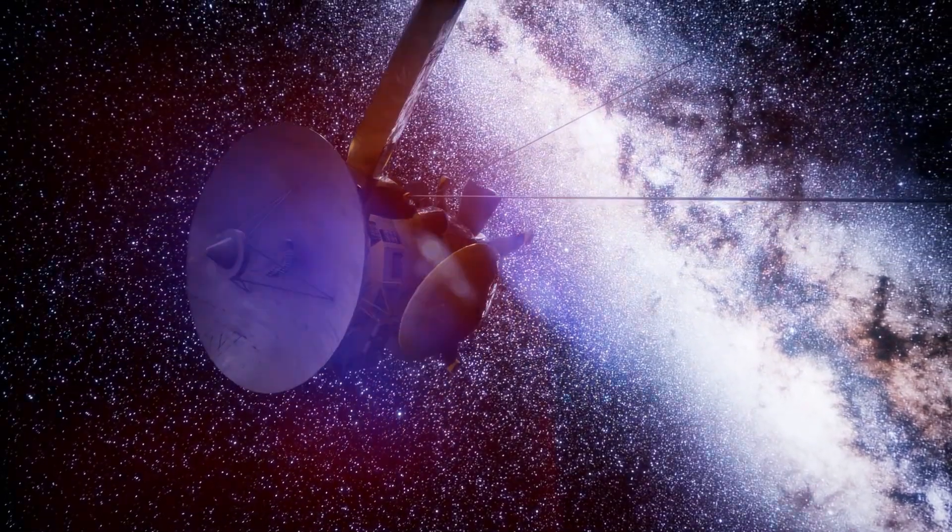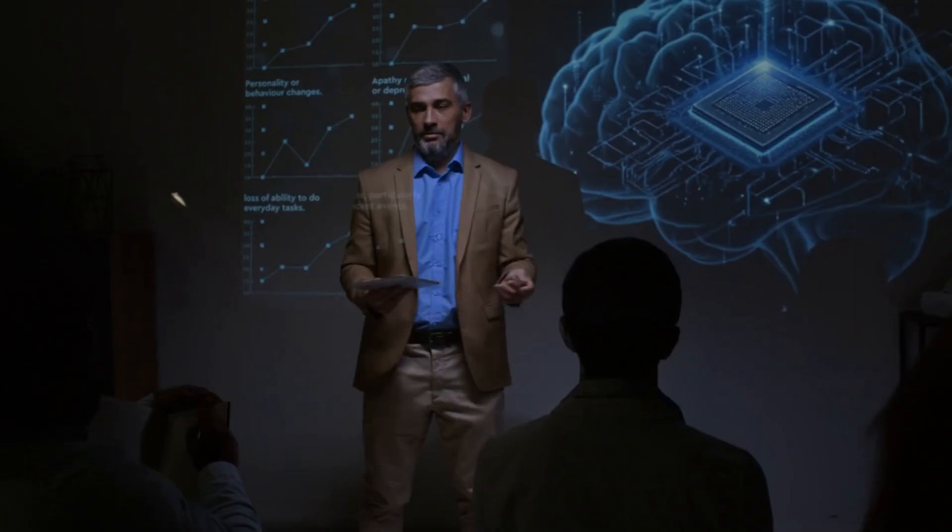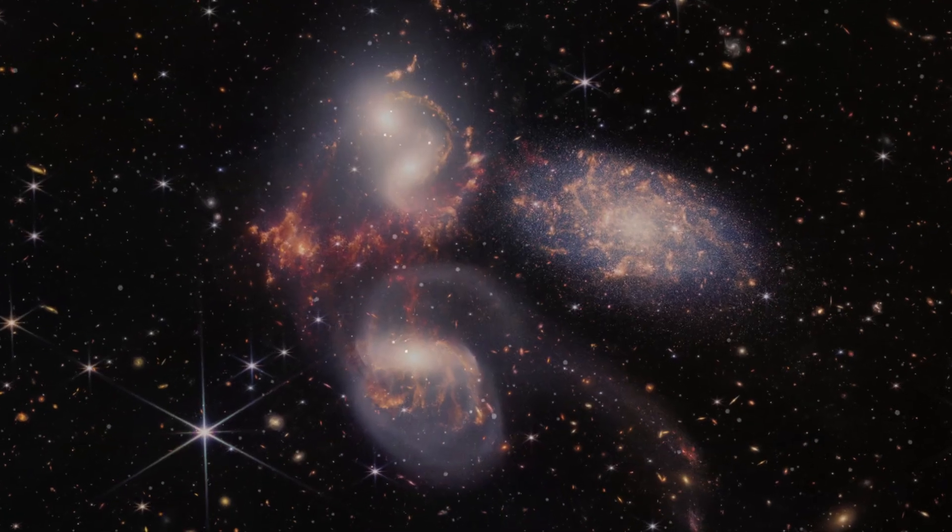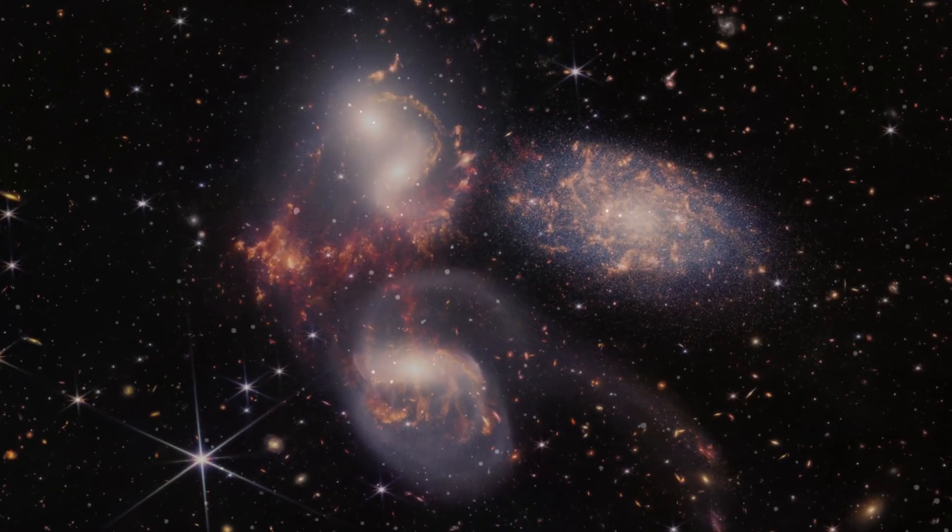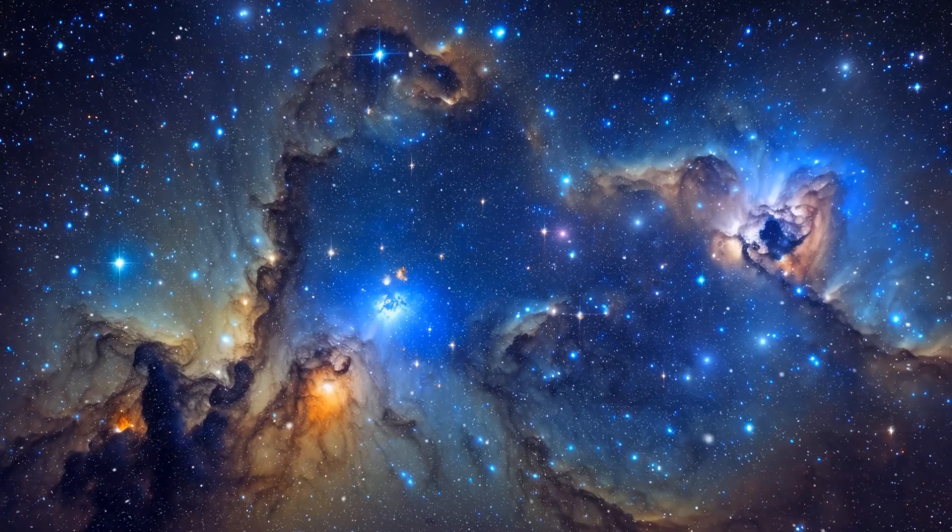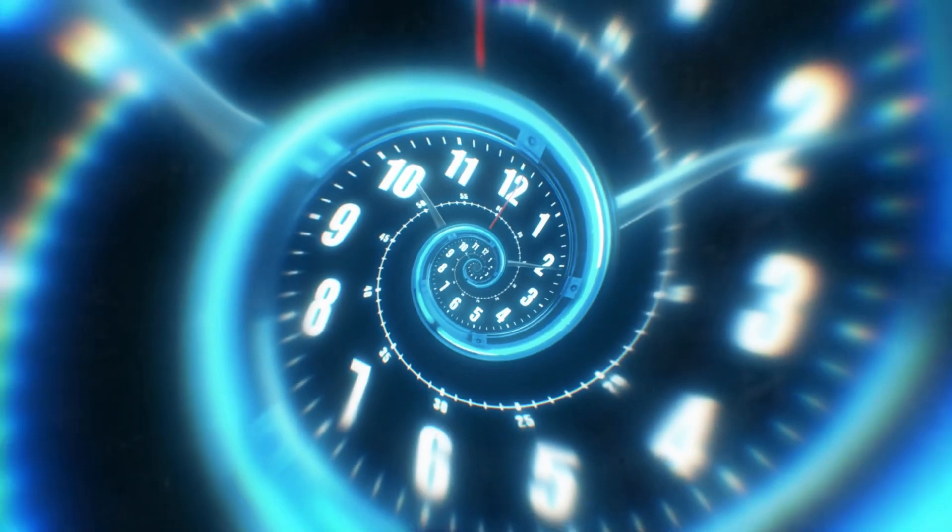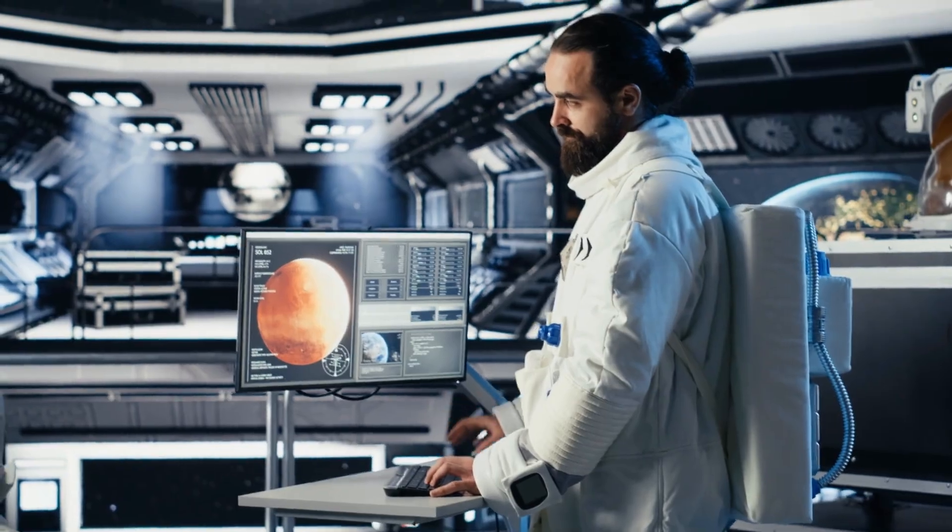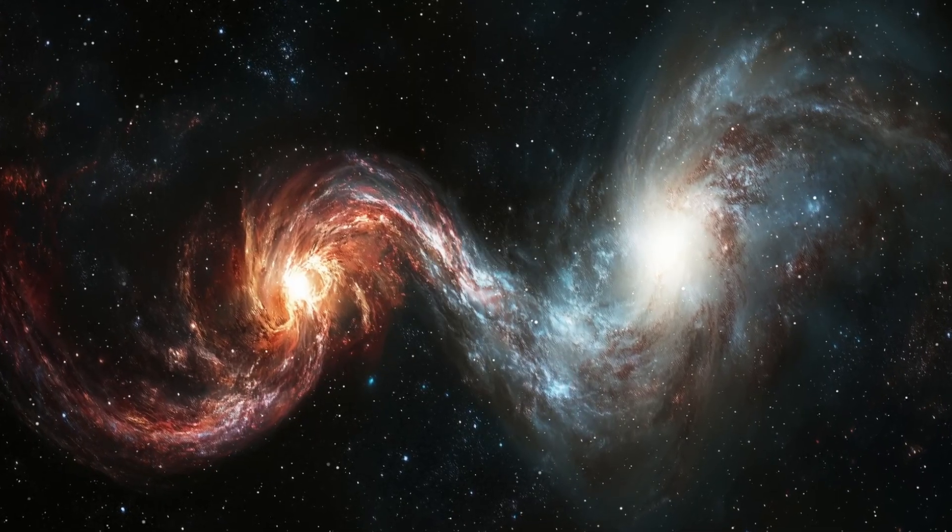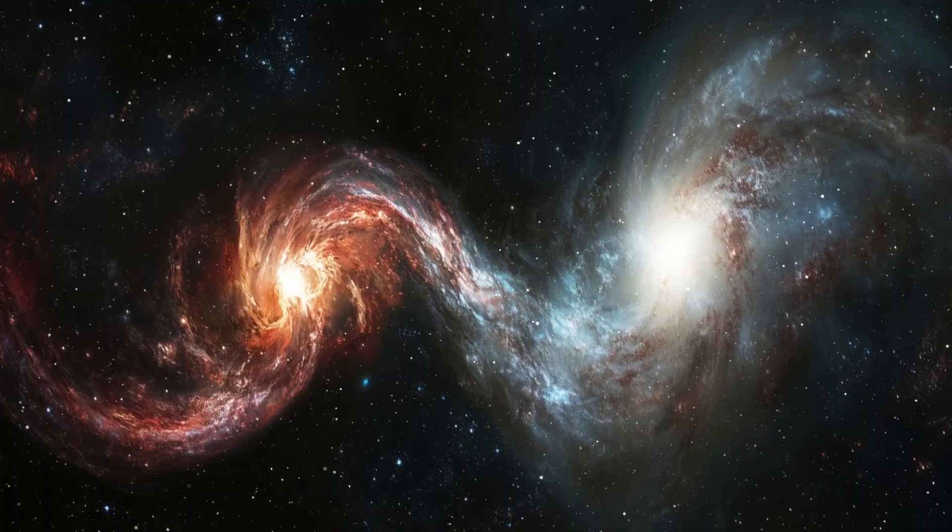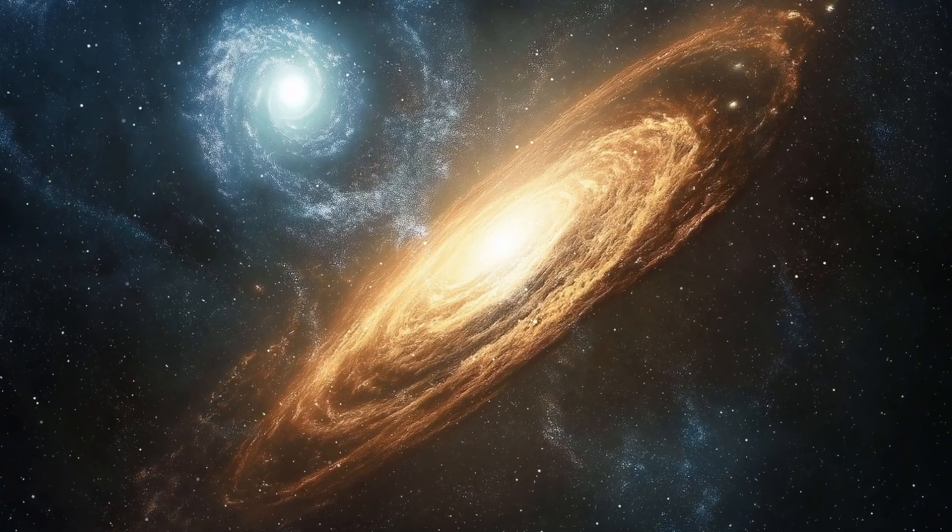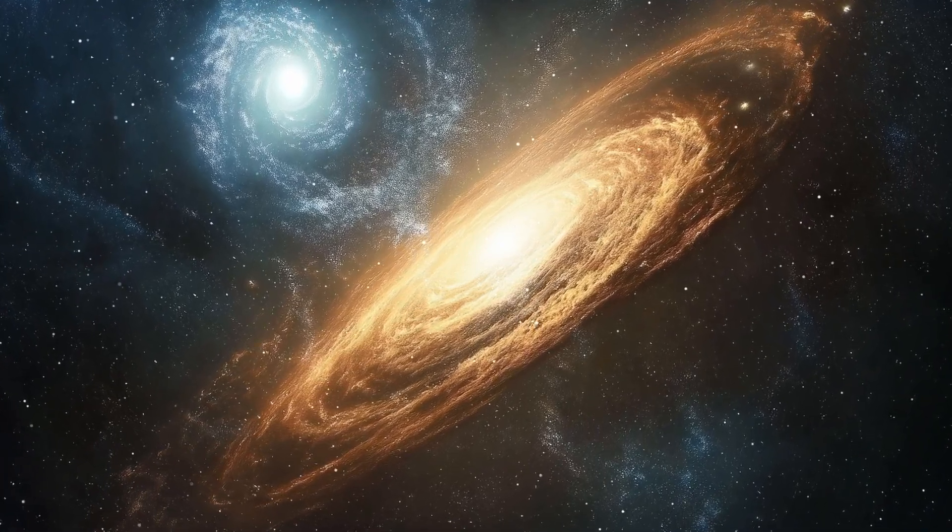Not because Webb is failing, but because it's working too well. We're seeing things we didn't expect. Galaxies too big, too evolved, too soon. According to the standard model of cosmology, galaxies need hundreds of millions of years to form structure. But Webb's earliest glimpses, just 300 million years post Big Bang, show mature galaxies with complex shapes, rich star clusters, and even supermassive black holes.